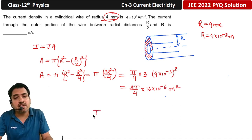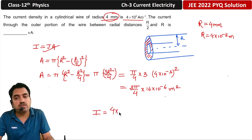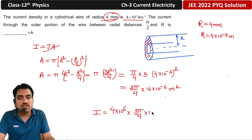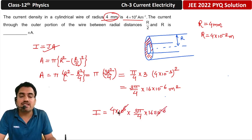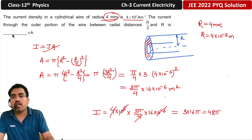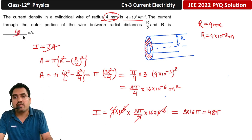Now we calculate current I = J × A. J is 4×10⁶ A/m², and area is 3π/4 × 16×10⁻⁶ m². The 10⁻⁶ and 10⁶ cancel, and 4 and 4 also cancel, leaving us with 3 × 16 × π, which equals 48π. So the answer is 48π ampere.